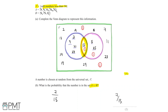Part B is worth two marks. The first mark is for getting a numerator of 7, and the second mark is for getting a denominator of 15, giving a final answer of 7/15 for full marks.